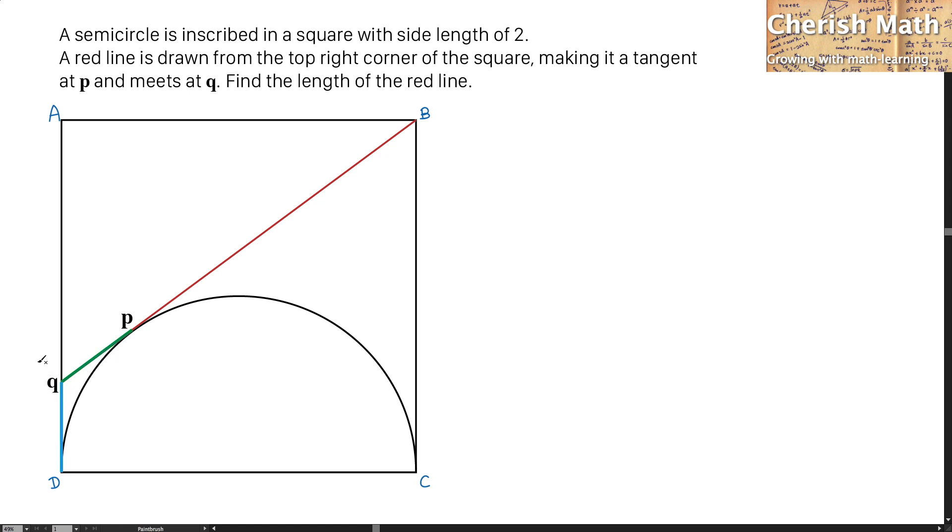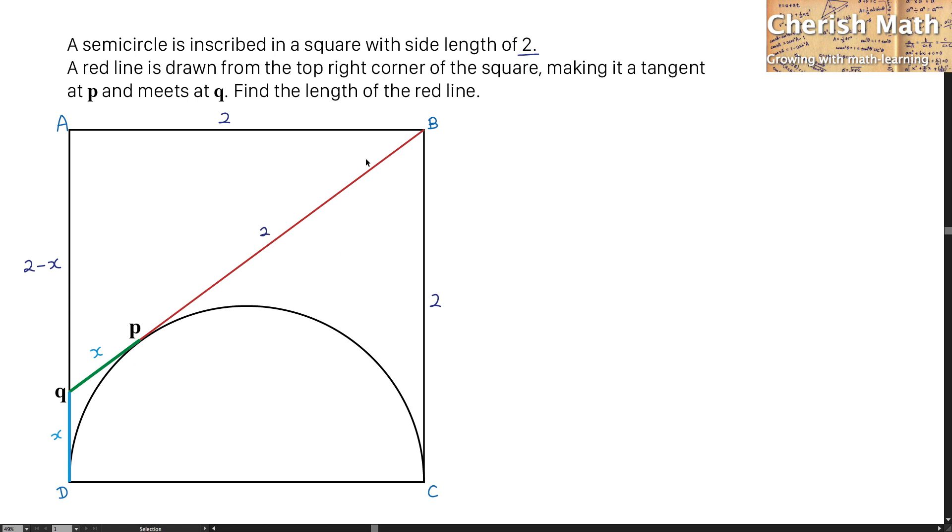So I'm going to label the distance here as X. For the distance of A to Q, that is going to be the 2 units of the side length of the square minus the distance of X. For the given side length of the square as 2, it is applied for the line AB and the line BC. The line BC is a tangent at point C and the line BP is a tangent at P. I can conclude that BP is 2 units. I now have enough information to solve the problem.